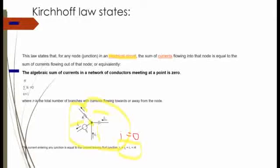Here, n represents the total number of branches with current flowing towards or away from the nodes. Whether the current is incoming or outgoing, this node will be represented as n.